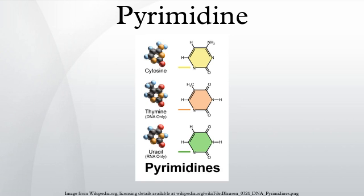Pinner first proposed the name pyrimidine in 1885. The parent compound was first prepared by Gabriel and Coleman in 1900, by conversion of barbituric acid to 2,4,6-trichloropyrimidine followed by reduction using zinc dust in hot water.